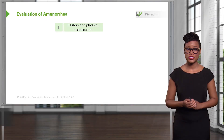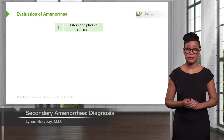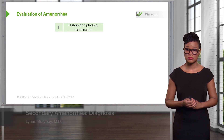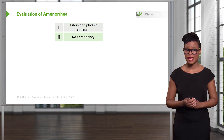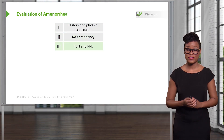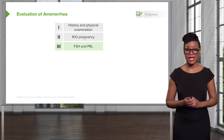Now let's go over what to do when a patient presents with secondary amenorrhea. First, complete a thorough history and physical examination. Second, rule out pregnancy, as this is a common cause in reproductive-age patients. Third, obtain an FSH — usually in conjunction with an estradiol on day three of the menstrual cycle — and a prolactin level, which should be drawn in the AM while fasting.